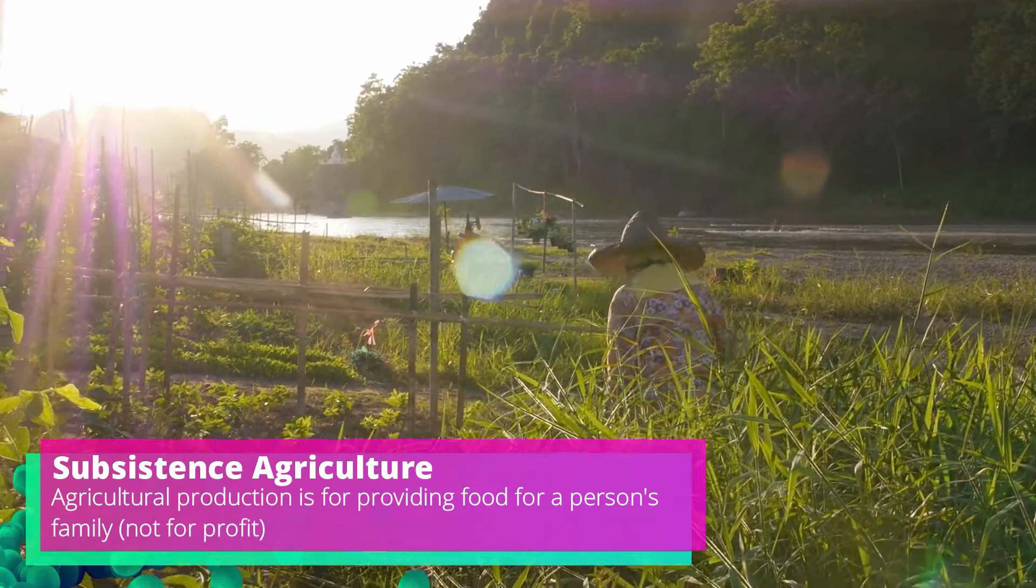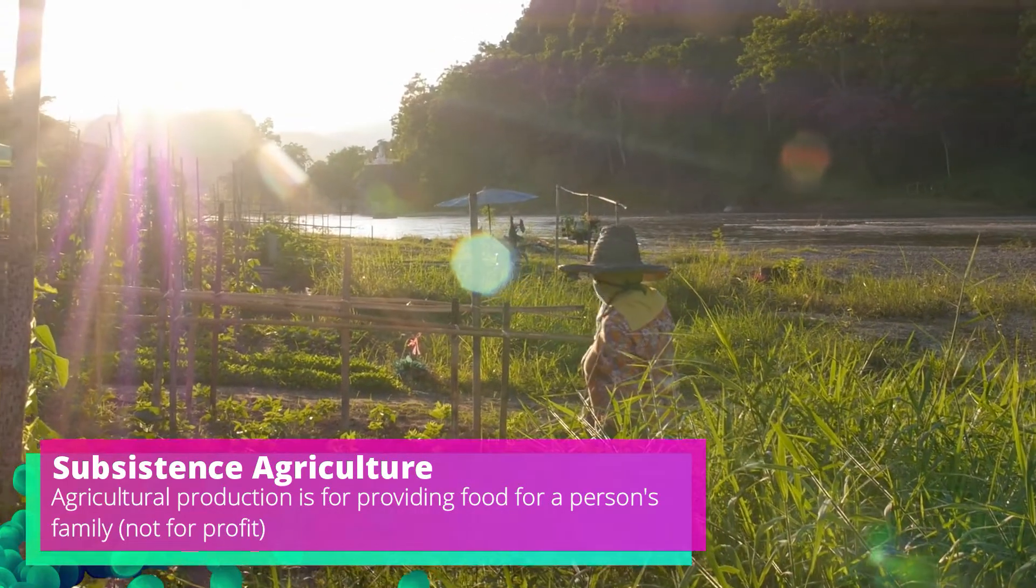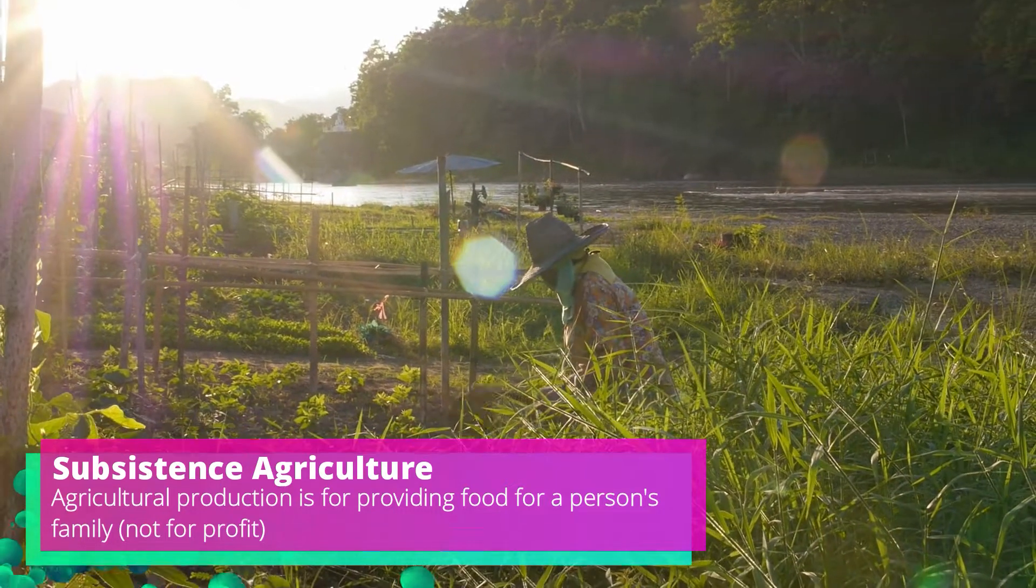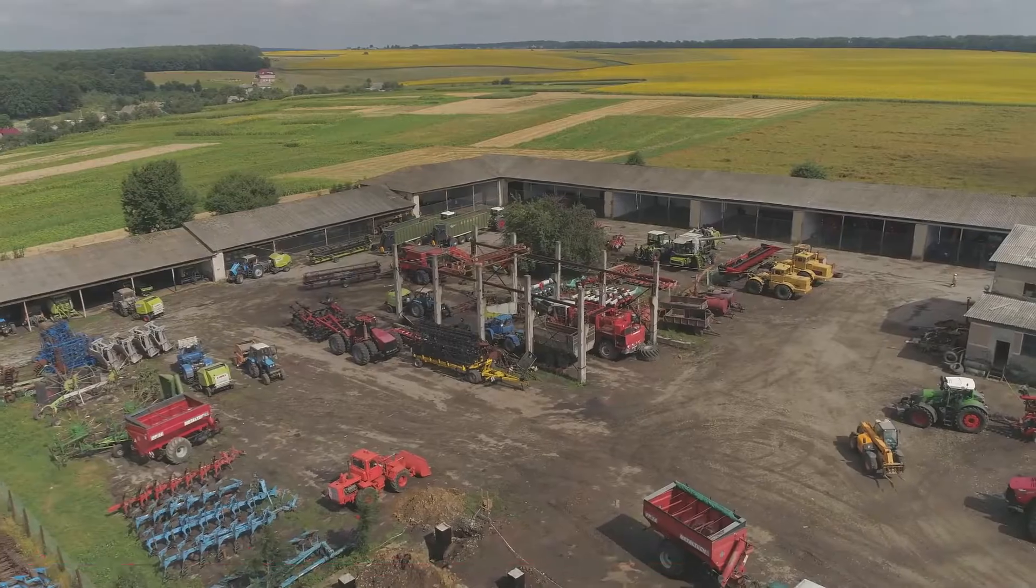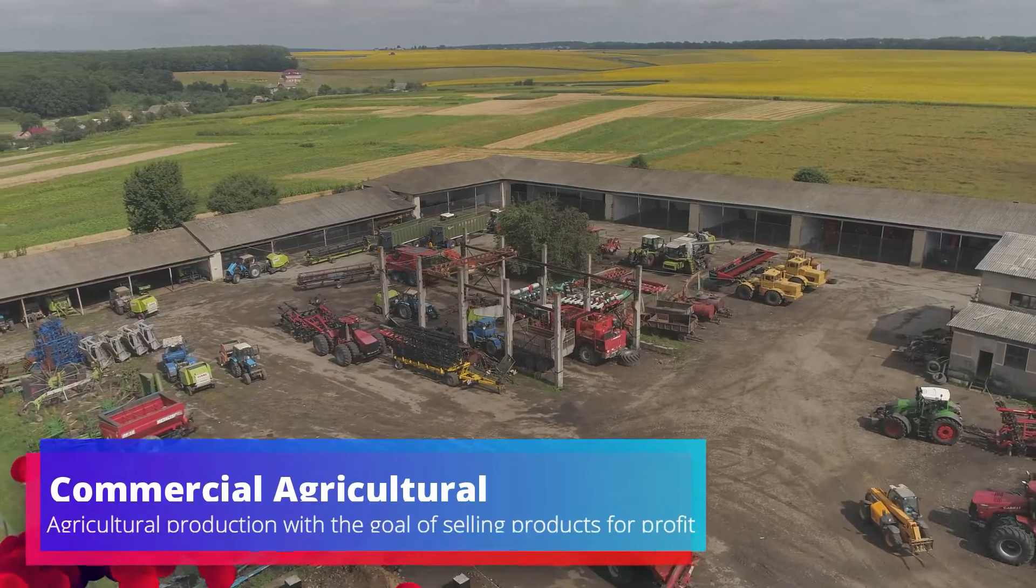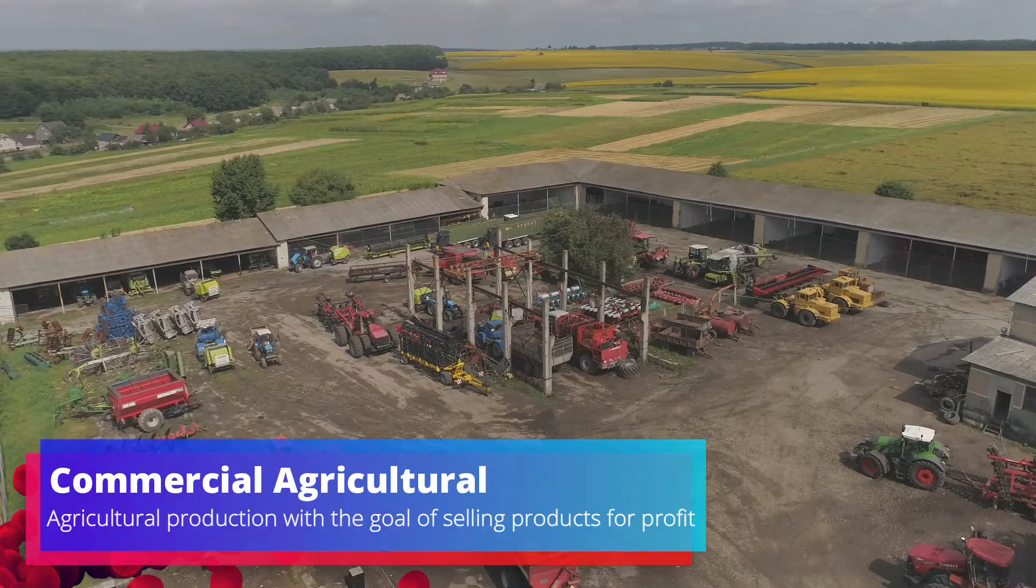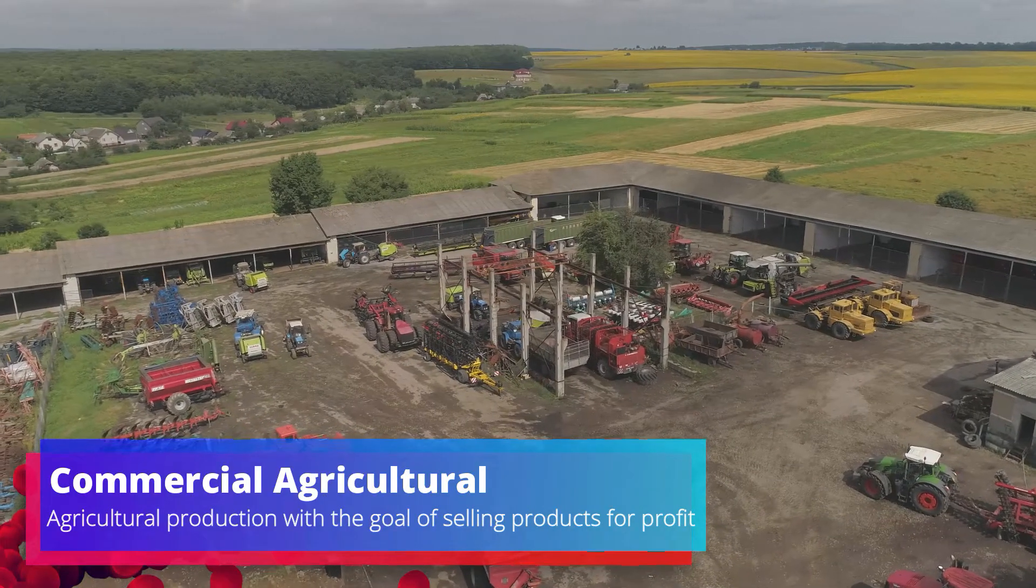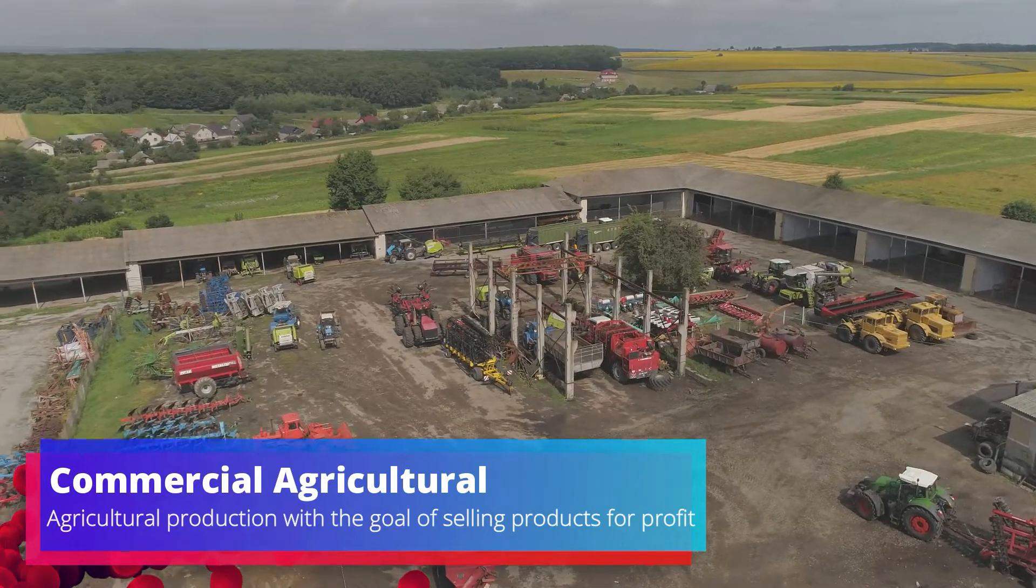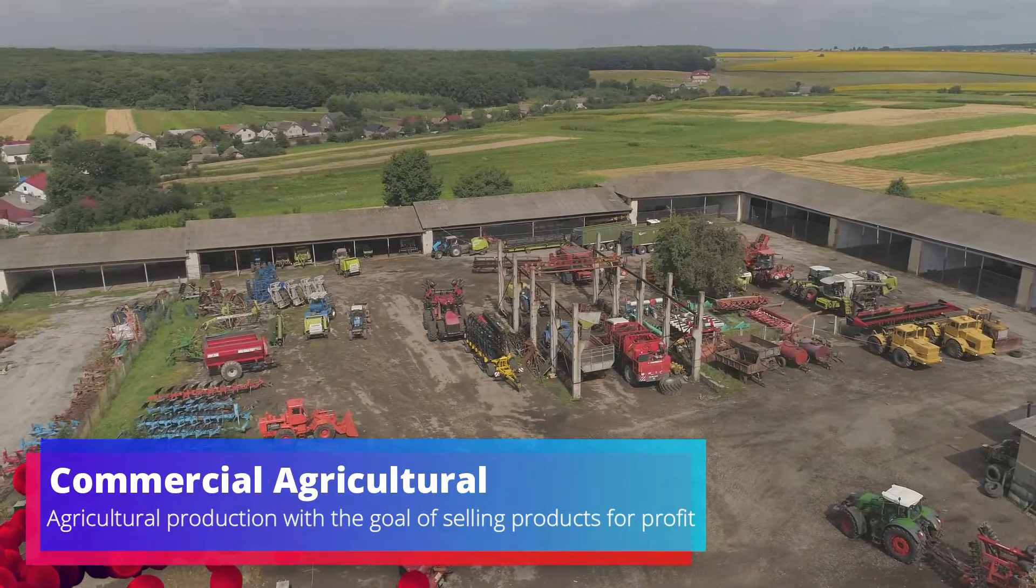This type of agriculture traditionally uses less machines and more human labor with the average farm size being smaller. On the other hand, commercial agriculture is agricultural production that focuses on growing crops for profit. This type of agriculture traditionally has a larger farm size that utilizes advanced machines to help produce large quantities of crops.